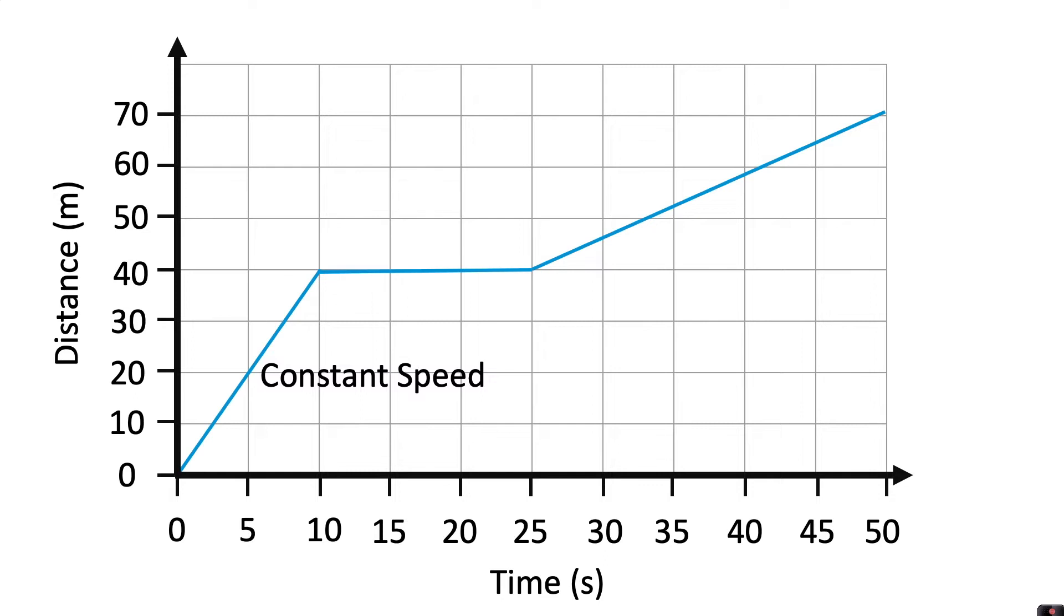A horizontal straight line however means the object is stationary. And the final part of the journey we have another straight line which means it's travelling at a constant speed again. The steepness of the line when the object is travelling at constant speed gives us an indication of how fast the object is travelling.